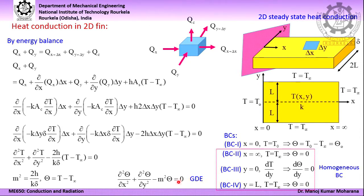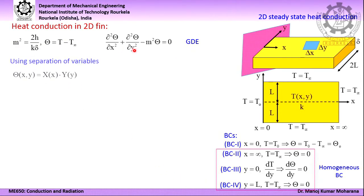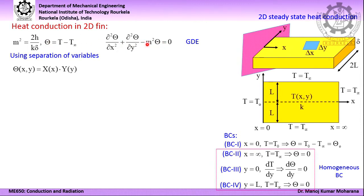Now if you closely observe these equations, boundary conditions 2, 3, and 4 are homogeneous in nature. Earlier only boundary condition 3 was homogeneous. We are able to make boundary conditions 2 and 4 homogeneous, including the governing differential equation. For the purpose of solution, we need to take the help of the method of separation of variables, where we consider the solution theta(x,y) as the product of two separate functions X and Y — where X is a function of x only and Y is a function of y only.